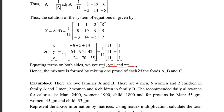So in the mixer, the mixer is formed by mixing one pound of each food — one pound of A, one pound of B, and one pound of C.